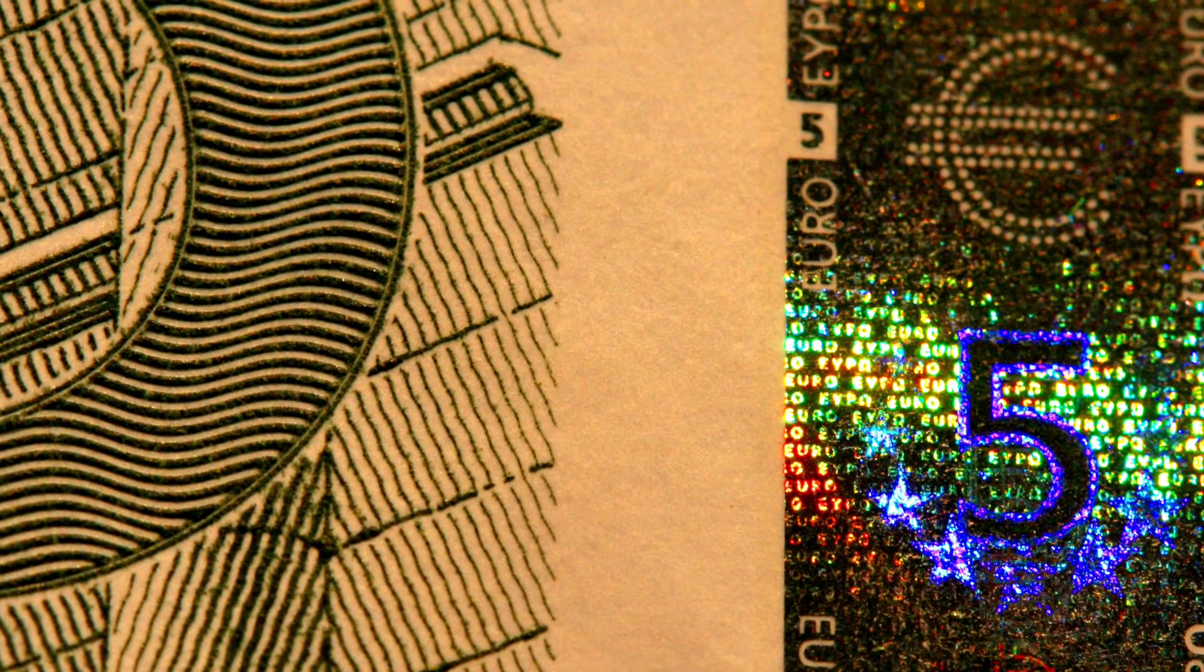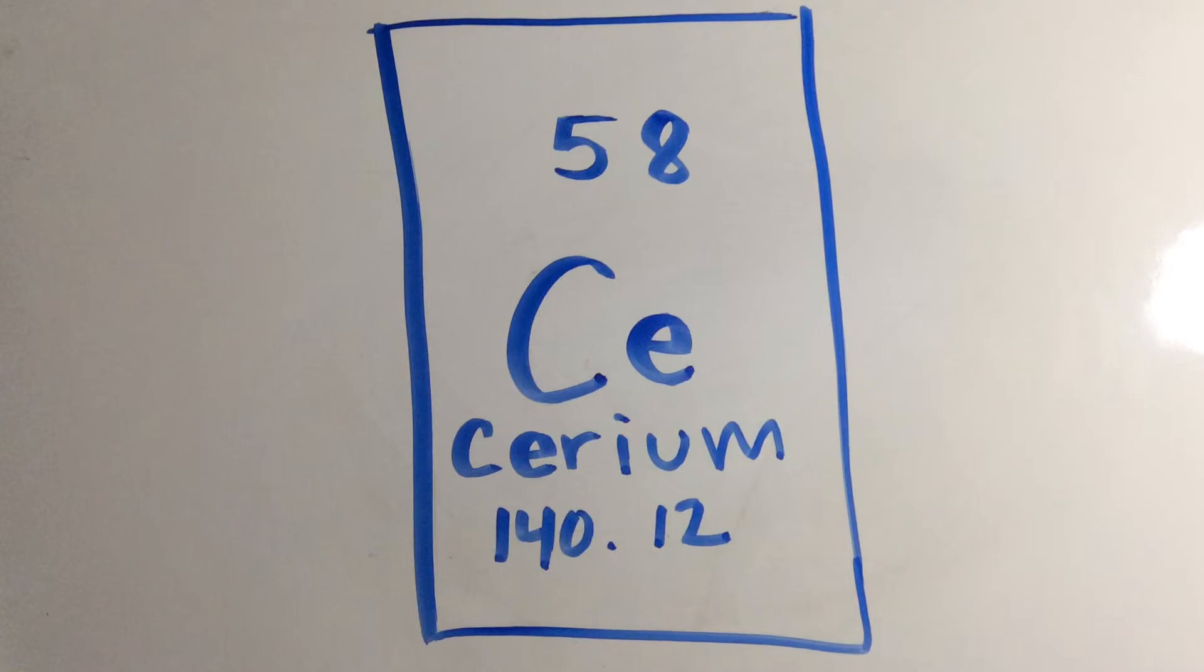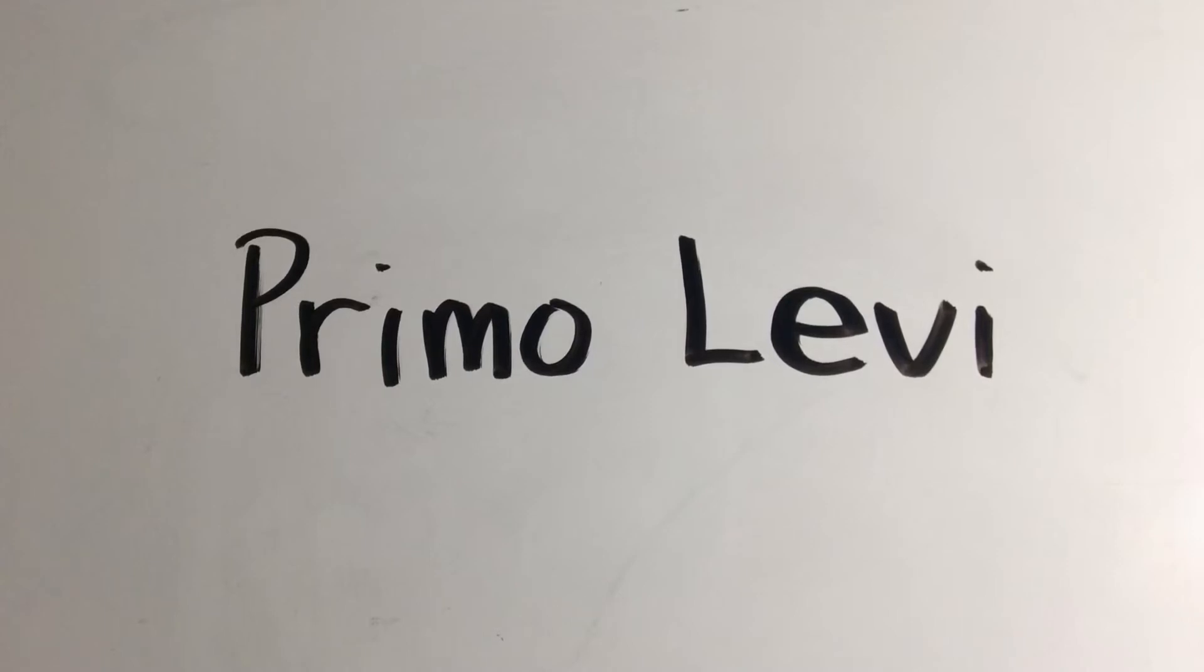Moving on to elements as currency, we talk about cerium and its role with Primo Levi, who used the element to barter for food in a concentration camp, since it could be used to spark and light cigarettes.